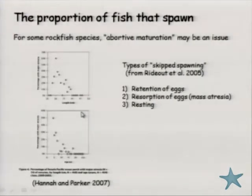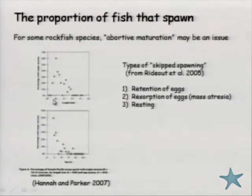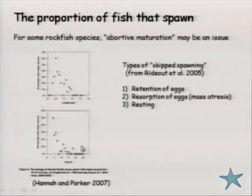Some people in the audience might be interested in a West Coast example of this abode of maturation — a type of skip spawning. This is from data from Hannah Parker for Pacific Ocean Perch, or POP, off the Oregon Coast. We see this abode of maturation seems to be more prevalent at younger ages and smaller sizes than in older and larger fish. This is a West Coast rockfish example of this process, and something to look at in modeling in the future.